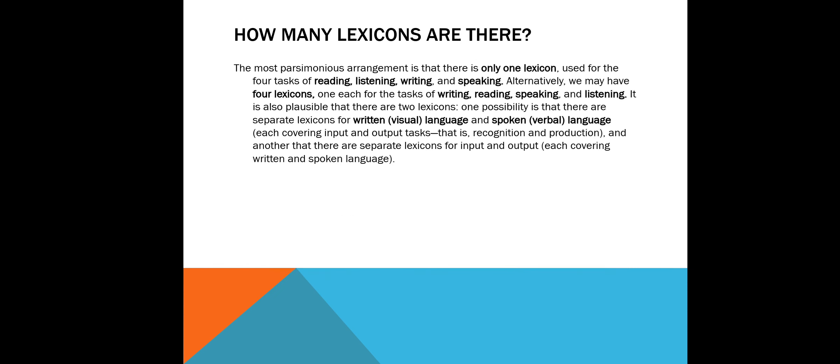Next, let's talk about how many lexicons there are. The most parsimonious arrangement is that there is only one lexicon used for the four tasks: reading, listening, writing, and speaking. Alternatively, we may have four lexicons, one each for writing, reading, speaking, and listening. It is also possible that there are two lexicons. One possibility is that there are separate lexicons for written visual language and spoken or verbal language, each covering input and output tasks — that is, recognition and production. Another possibility is that there are separate lexicons for input and output, each covering written and spoken language.